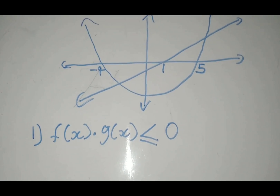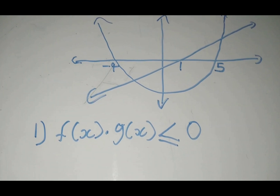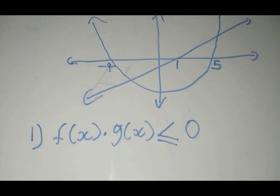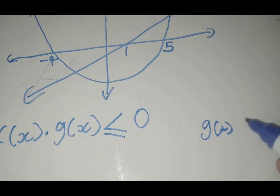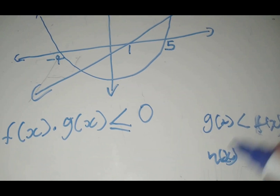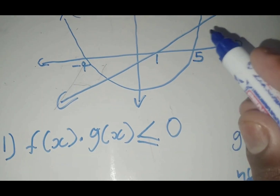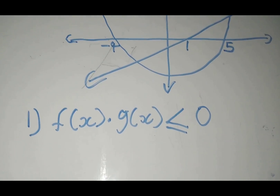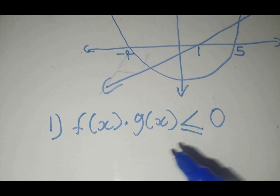Let's go to level 2. In the previous level 1, we focus on the point of intersection - whenever one graph must be greater than or less than the other graph, we focus on the points of intersections where they meet and draw the lines. But in level 2, when you see multiplication, it's different. You don't focus on the point of intersection. Please remember that - you focus on the x-intercept of each graph.